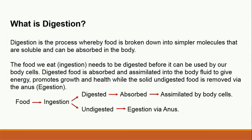So what is digestion? Digestion is the process whereby food is broken down into simpler molecules that are soluble and can be absorbed in the body. The food we eat needs to be digested first before it can be used by our body cells. The process whereby we take in or eat food is called ingestion. Digested food is absorbed and assimilated into the body fluid — that is, into the bloodstream — in order to give energy, promote growth and health.